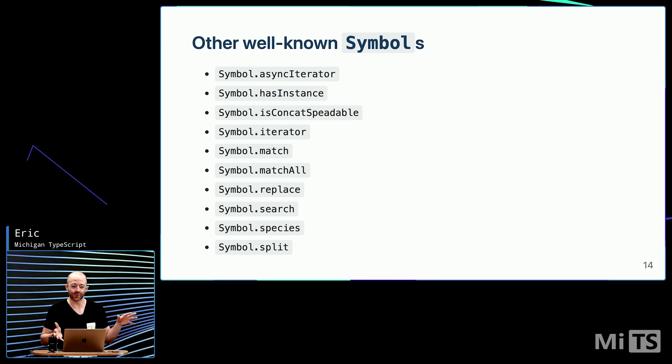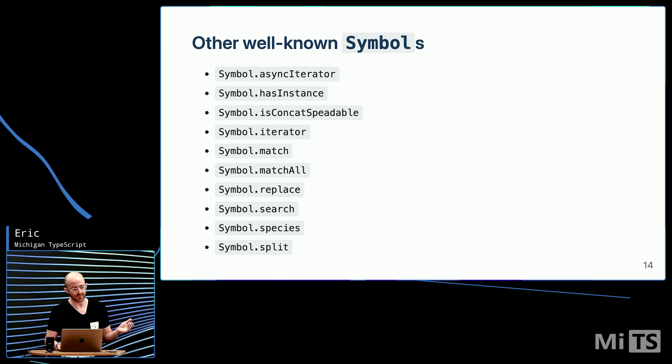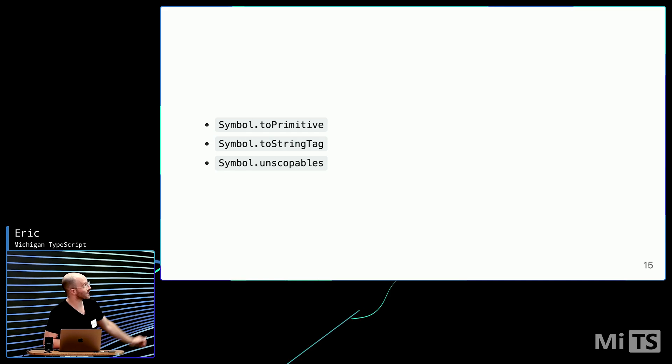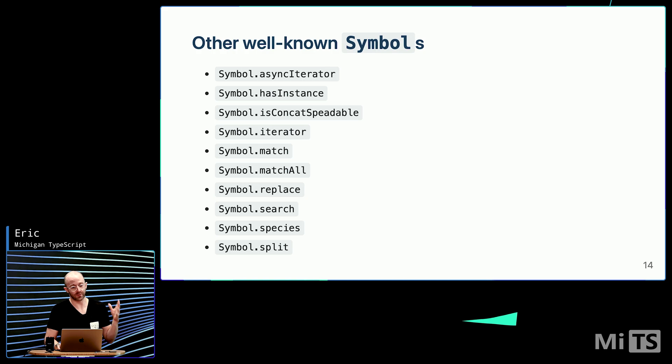I just thought it'd be useful to list out some of the other well-known symbols. These are already being used in JavaScript. It just might not be super obvious because a lot of it is just built into arrays and objects and things like that automatically. So, you don't have to think about them. But sometimes when you're building code, when you're building apps, you might need to reach for some of these symbols to do certain things automatically on your objects. Iterators like the really common one that I know about. Two-string tag is another common one.